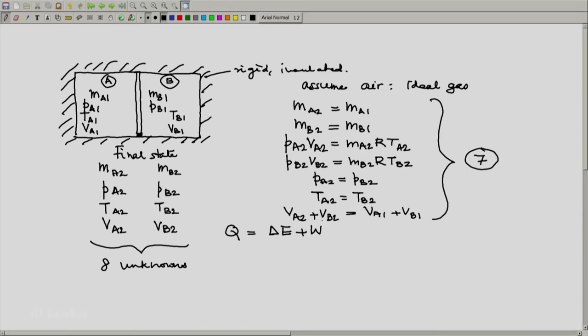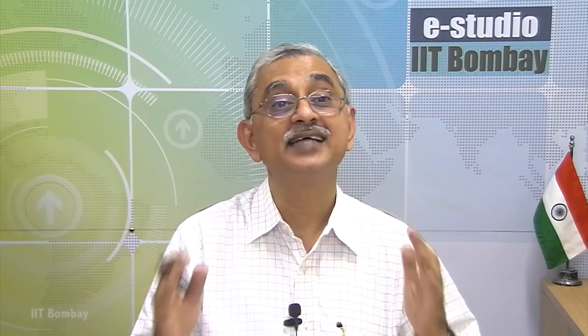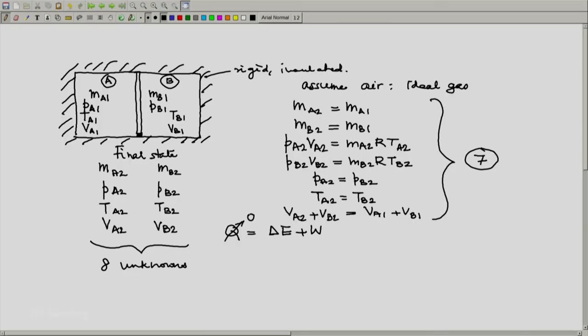Now first we are given that the complete system to which we are applying this is an insulated system. That means it is an adiabatic system. And that is why this will be 0. Why? Because it is an insulated system. Now what about W?